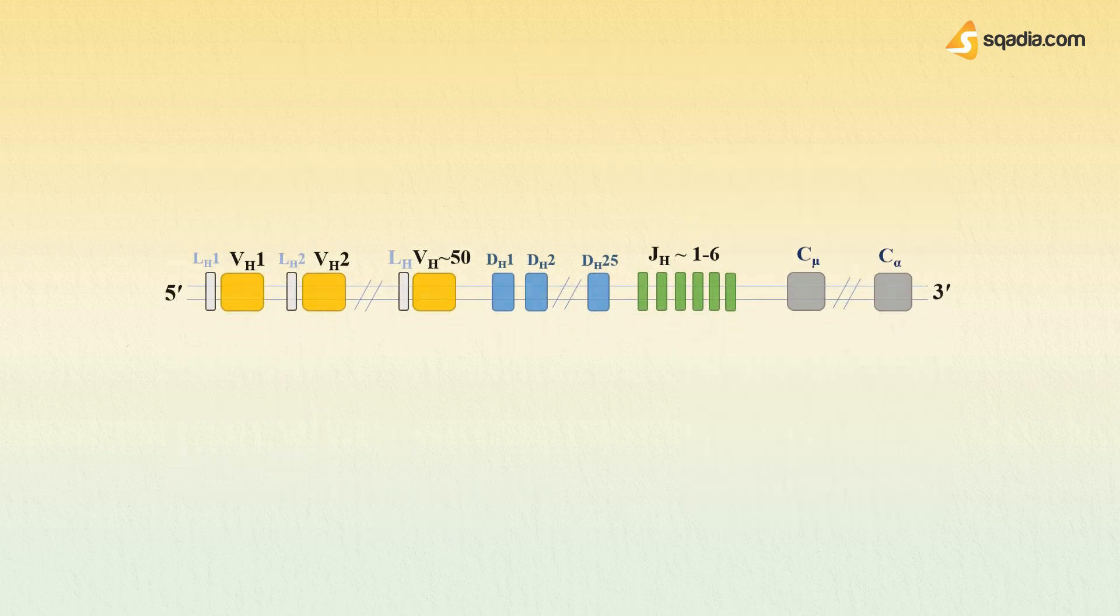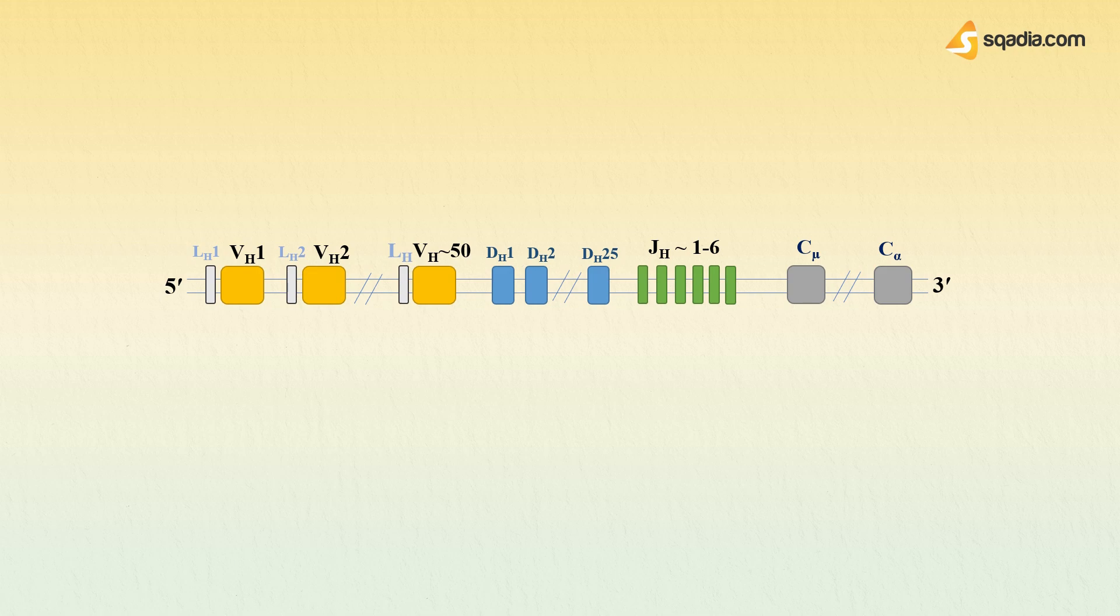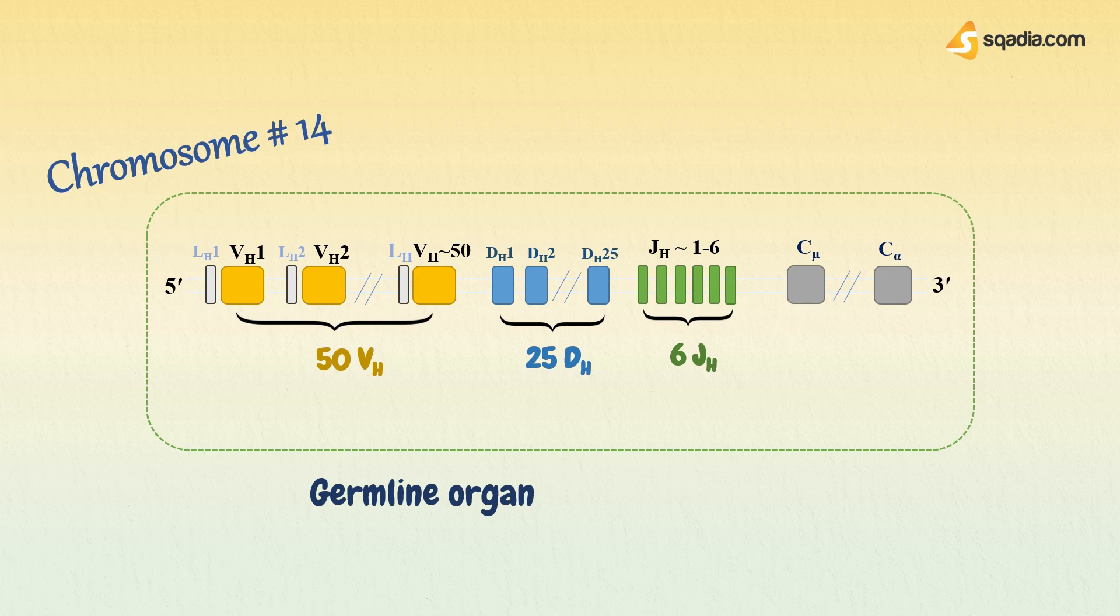Gene segments exist in sets or groups that are arrays of different versions of that gene segment. For example, six different JH gene segments constitute the JH set. The gene segments for heavy chain reside on chromosome number 14 in the human genome, and approximately 50 VH, 25 DH, and 6 JH gene segments are present in the heavy chain locus.